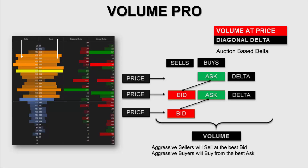It compares the bid traded volume of one price to the ask traded volume of the price located directly above — so it compares the sells and the buys. We calculate it the same way as the linear delta: we subtract from the bid volume the ask volume, but diagonally.